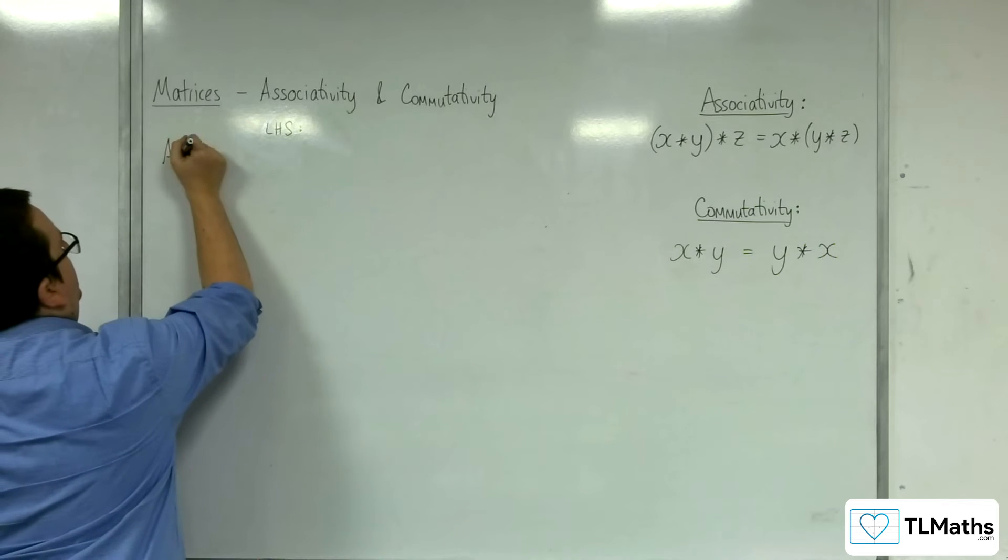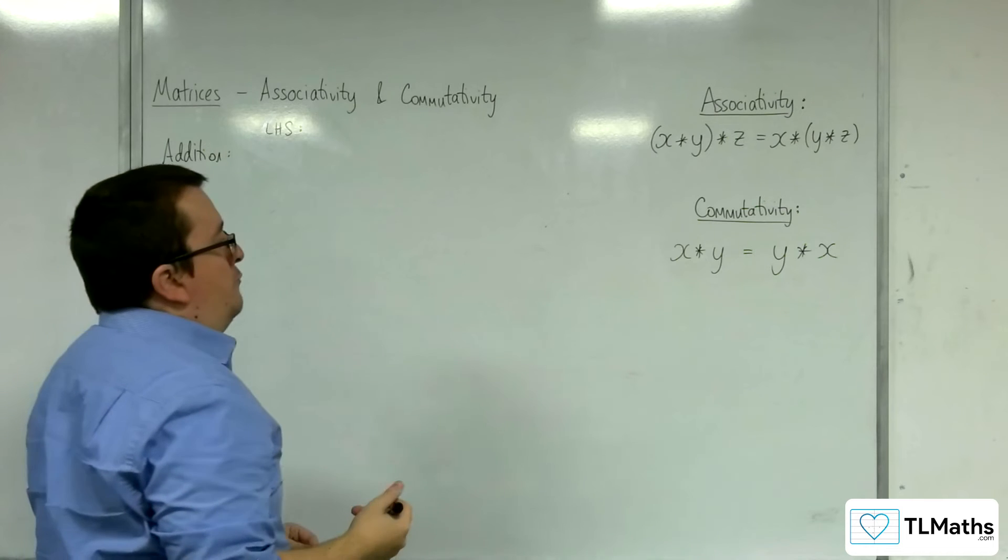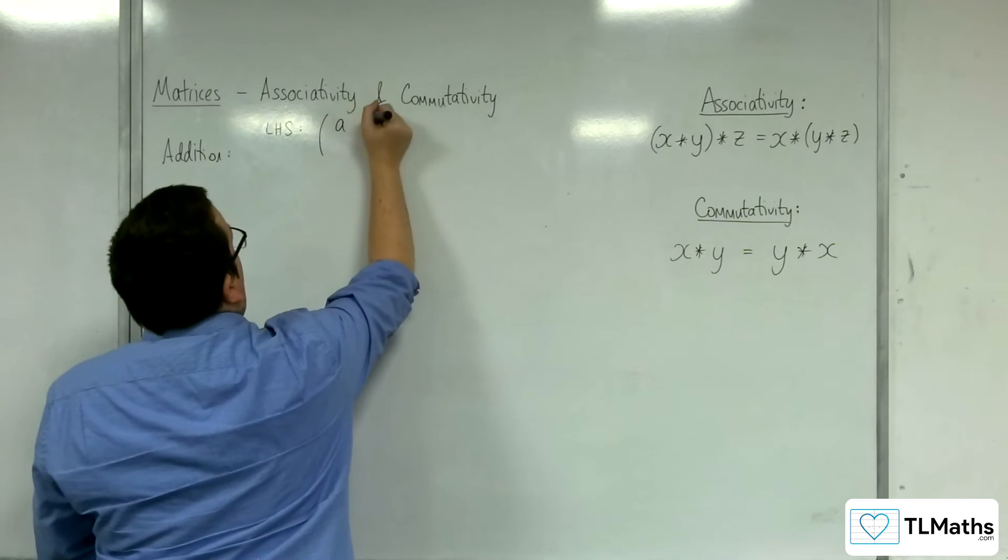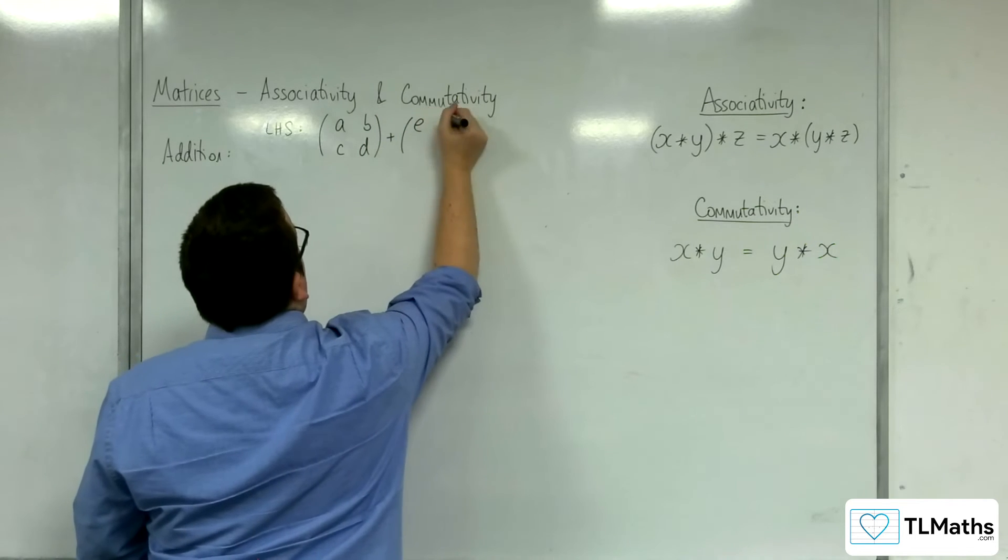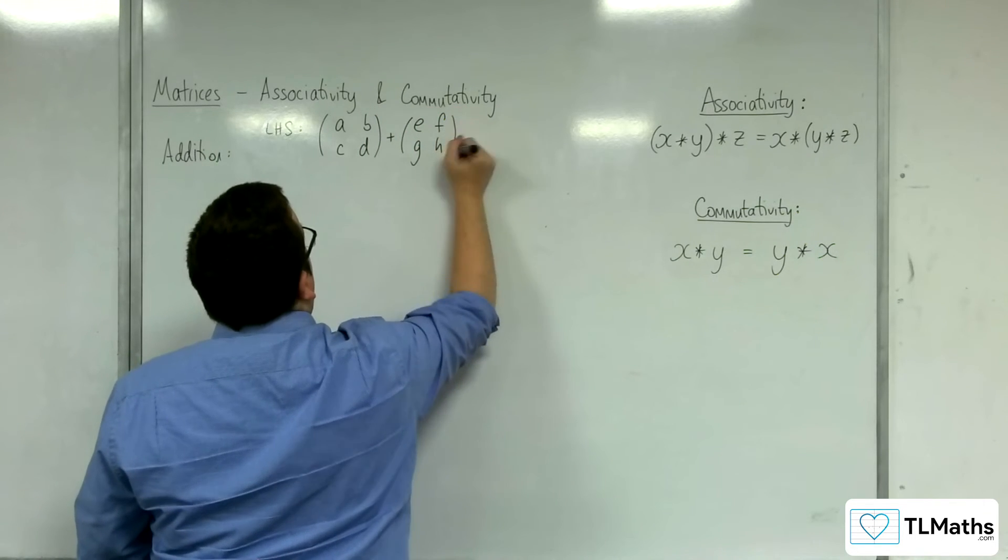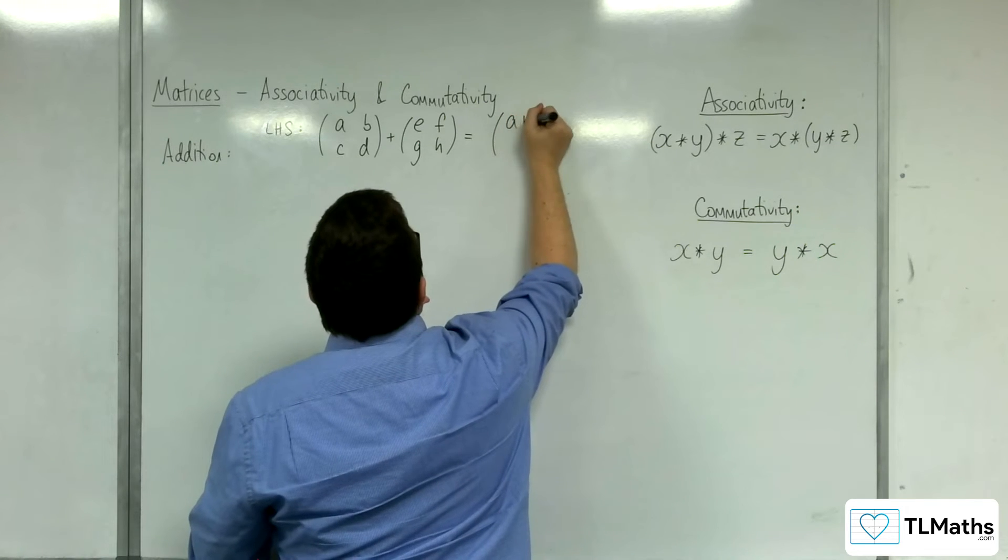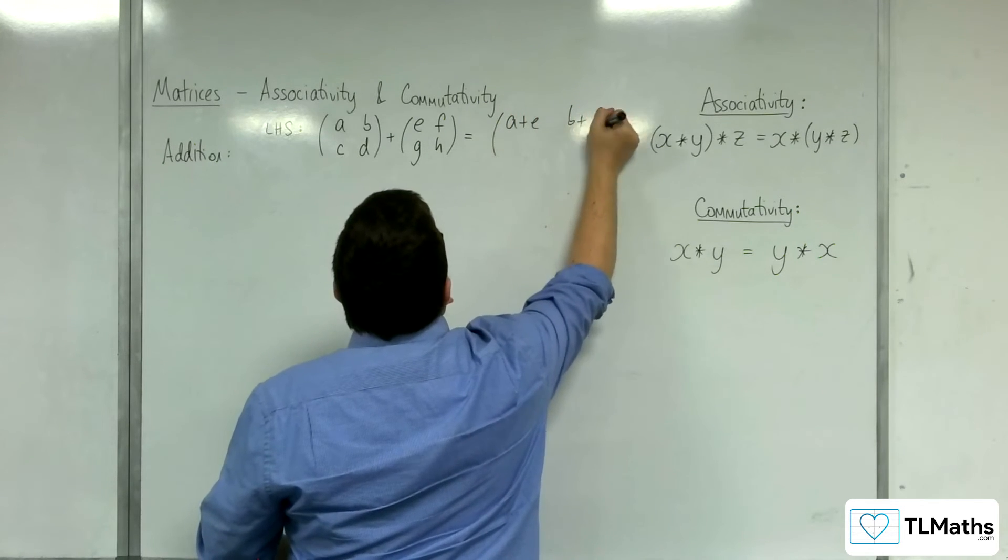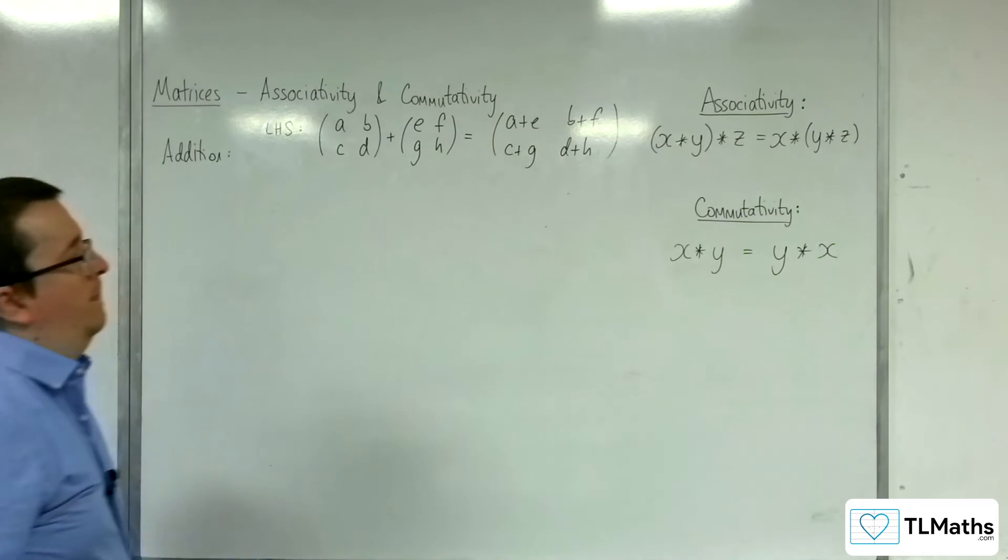So for addition, we would have a, b, c, d, plus e, f, g, h. And so our matrix would be a+e, b+f, c+g, d+h.